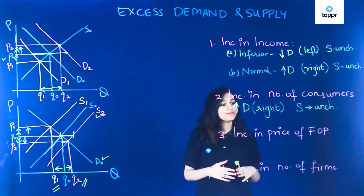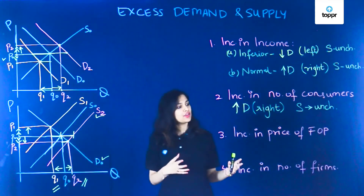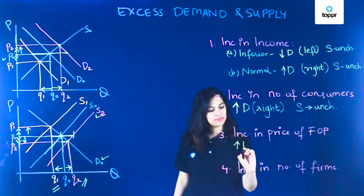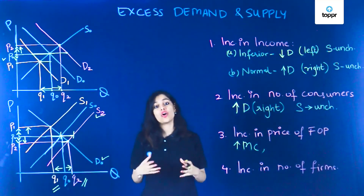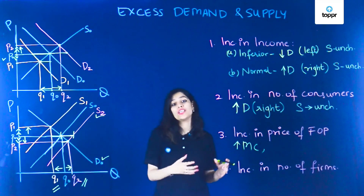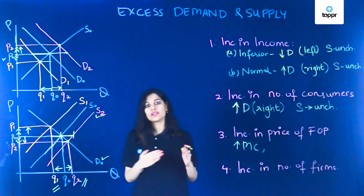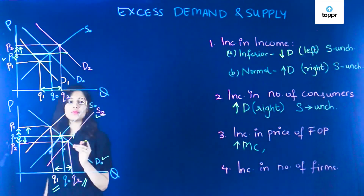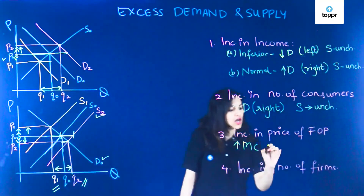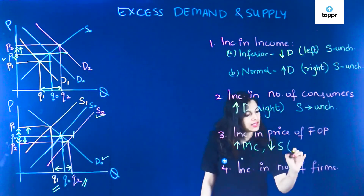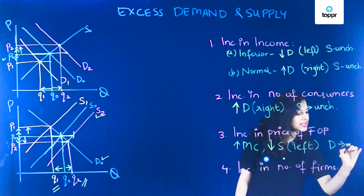Now let's talk about an increase in the price of a factor of production. An increase in the price of a factor of production increases the marginal cost. An increase in marginal cost makes it costlier for a firm to produce as many goods as before, and hence the supply of the product falls, moving from S0 to S1 towards the left, while demand remains unchanged.